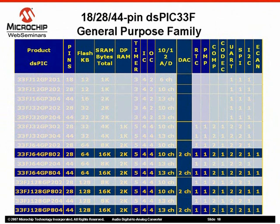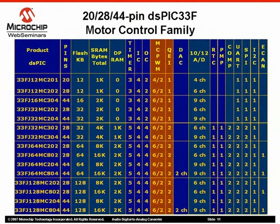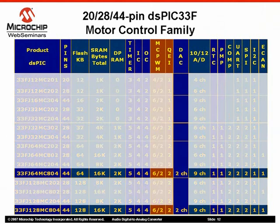The 28-pin count devices only offer the positive-negative DAC outputs. Here are the two devices that include the audio DAC in the motor control family. Both devices are in the 44-pin count package, and the only difference between the two devices is the flash size.